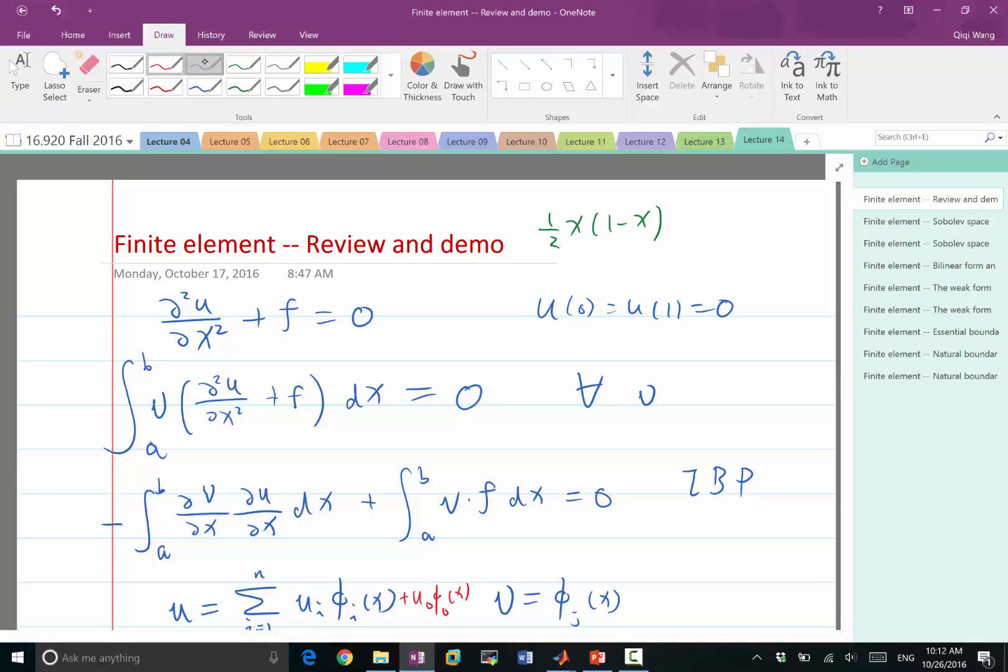So with the left boundary equal to 1, what we get is half of x times 1 minus x plus 1 minus x, right? So 1 minus x makes my solution to be 1 when x is equal to 0. And this is a linear function, so it doesn't affect the second order derivative. So we still satisfy the same equation, but with a non-trivial boundary condition. And if you combine them, of course, you get 1 minus x times 1 plus half of x.